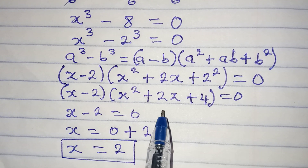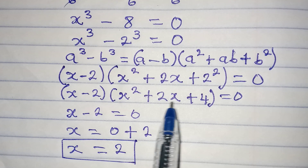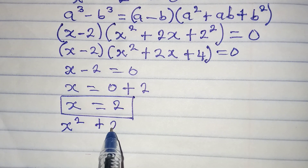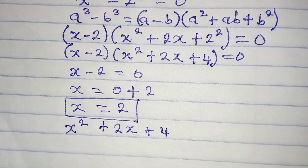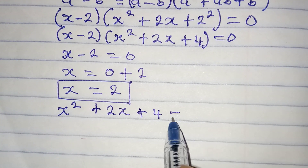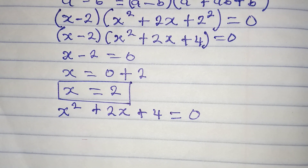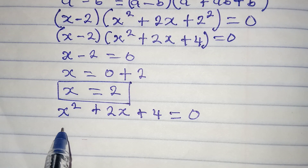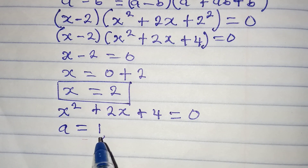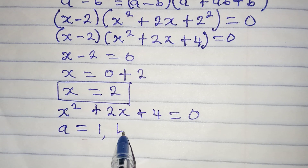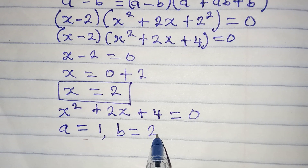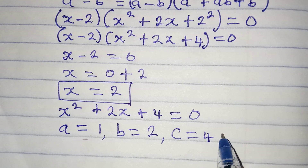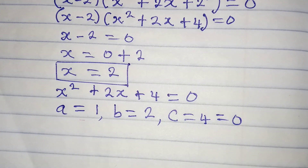If we want to continue with the quadratic expression, we equate it to 0 to get the quadratic equation x squared plus 2x plus 4 equals 0. We can solve this using the formula method. Here, a equals 1 (coefficient of x squared), b equals 2 (coefficient of x), and c equals 4 (the constant).